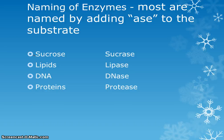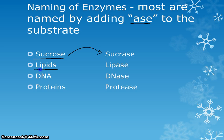We name enzymes by adding the suffix -ase to the substrate name. So if we're going to break down sucrose, we need an enzyme called sucrase. If we want to break down lipids, we need a lipase. DNA gets broken down by a DNase. You add -ase to the substrate's root word to get the name of the enzyme that will react with that substrate.